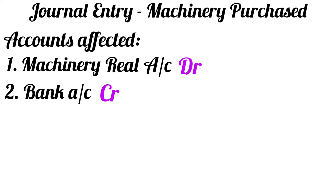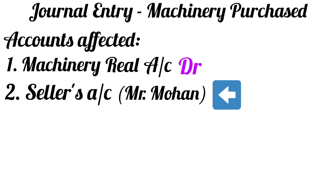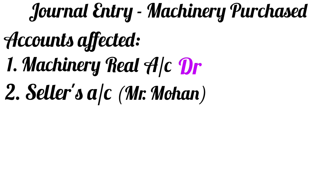Let us say the machinery is purchased on credit. In that case, machinery account will be affected. And the second account that will be affected would be the seller's account — the person who is selling the machinery on credit to us. Let's say we are buying the machinery from Mr. Mohan. So the two accounts that will be affected are machinery account and Mr. Mohan's account. Machinery account is a real account. The golden rule for real account says debit what comes in, credit what goes out. Since machinery is purchased, machinery will come into the business and hence machinery account will be debited.